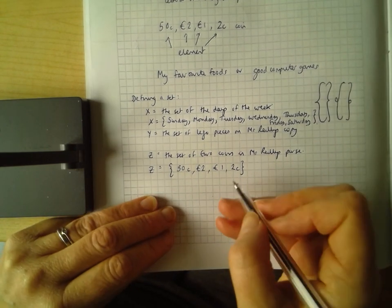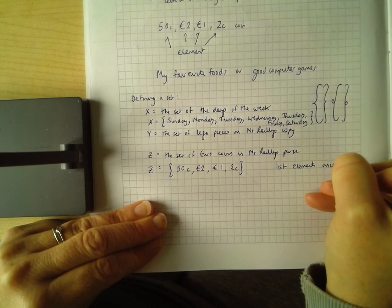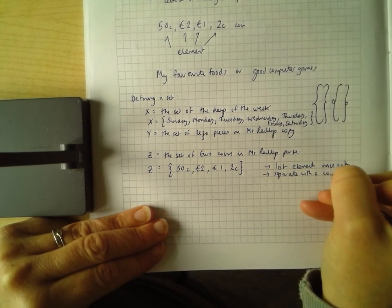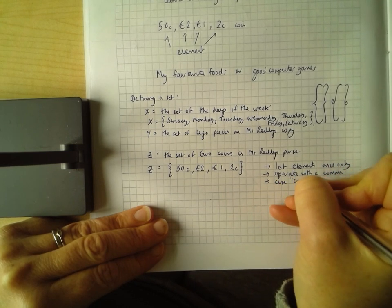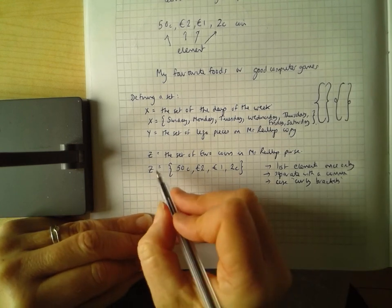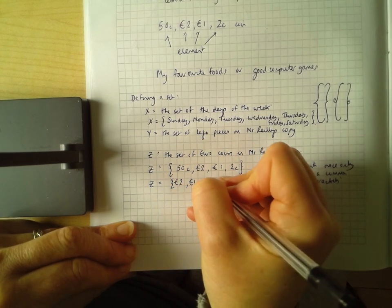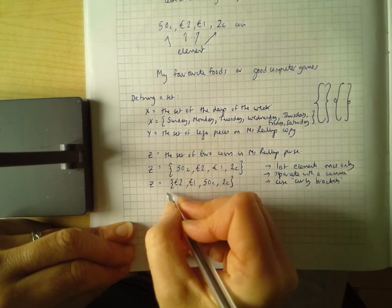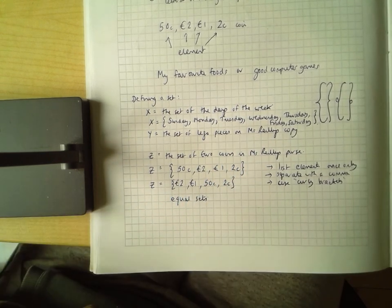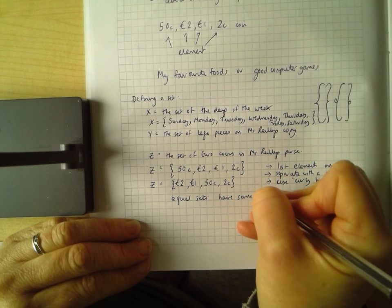So the important thing is that I only list each element once. The second important thing is that I separate them with a comma. I use curly brackets to show when the set starts and when the set ends. And the order is not important. If I wrote Z as being two euro, one euro, 50 cent, and two cent, that is the same set. This set is the same as this set. They are equal sets. Because they have the same elements.